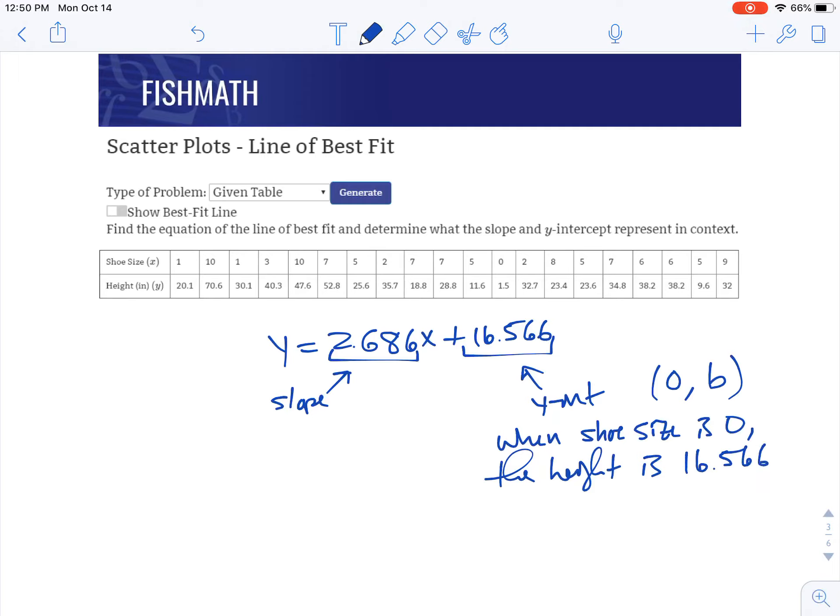For the slope, this is all about change. As the X thing, shoe size in this case, increases by one, the Y thing, the height, increases because the slope is positive by 2.686. And that's how we can take our line of best fit equation and put it into context to figure out what the slope and y-intercept mean.